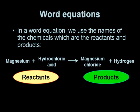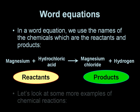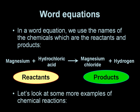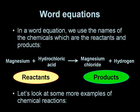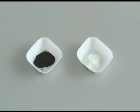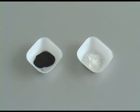You can see the hydrogen gas bubbling out of the solution. Now let's look at some more examples of chemical reactions. Here on the left you can see some copper oxide, which is a fine black powder, and on the right hand side you can see some zinc oxide, which is a fine white powder.